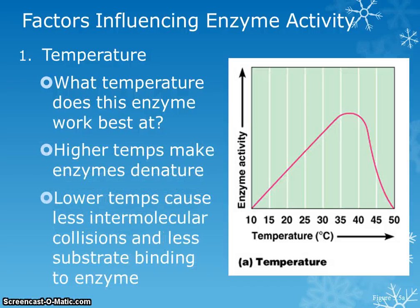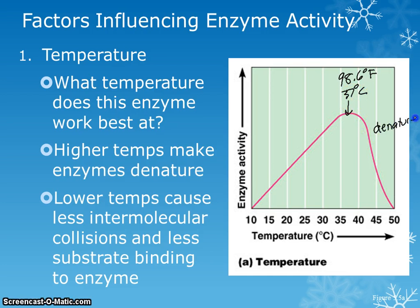One way to affect enzymes is temperature. Looking at this graph, this enzyme works best right around 37 degrees Celsius — that's our body temperature, 98.6 degrees Fahrenheit. If you go above that, you will denature the enzyme, meaning it loses its 3D shape. Its activity drops from the optimum rate down to nothing because you've messed up the slinky.